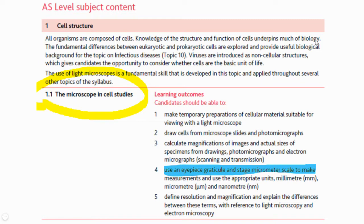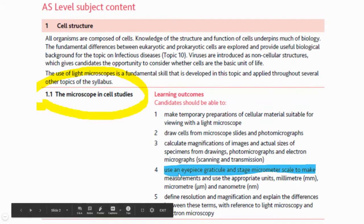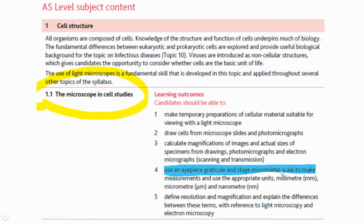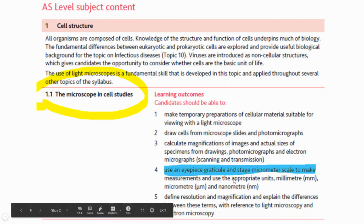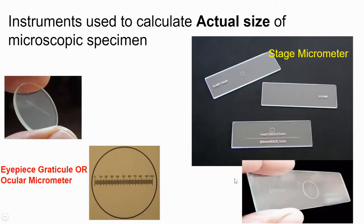Looking at objective number 4, it says: use an eyepiece graticule and stage micrometer scale to make measurements and use appropriate units — that is millimeter, micrometer, and nanometer. Basically, this objective requires you to use these two devices to measure microscopic objects, and now we are going to learn how.